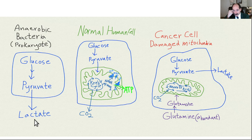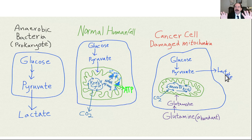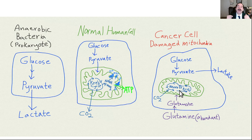When the mitochondria is damaged, the human cell turns into a cancer cell. It starts running glucose just to pyruvate anaerobically and expels lactate into the extracellular matrix, making it acidic. The tumor milieu tends to be acidic, which favors the cancer cell over surrounding cells. The cancer cell also takes glutamine — the most abundant amino acid — metabolizes it into glutamate, and pushes it into the Krebs cycle running in reverse.